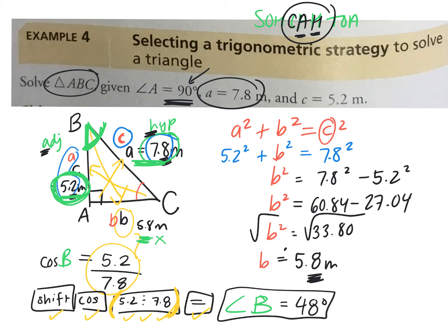So now we can use the sum of the interior angles in a triangle. All angles in a triangle add up to 180. So if this is 48, this is 90, what is angle C? Would be 180 minus 48 plus 90, which is equal to 42 degrees.